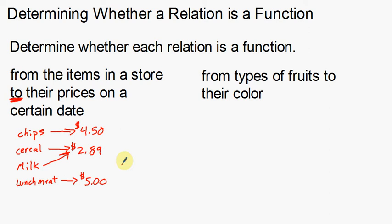So now I have chips, cereal, milk, and lunch meat — these are all my inputs. These are the first part of my relation, the items from the store. And then the prices are the outputs, the prices on that certain date. We want to figure out: is this a function or not? A function means for every input there is a unique output — whenever you plug something in, you only get one answer. If I put chips in my cart, they're only going to be $4.50. That's what they say on the shelf, that's what rings up at the counter — that's what we call a unique output.